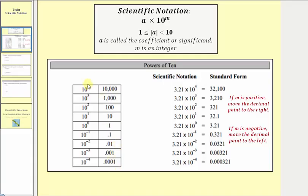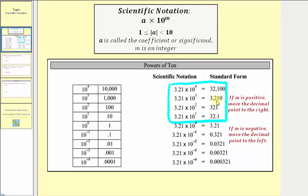Notice how when the exponent on 10 is positive, we're multiplying by a value greater than 1, and when the exponent on 10 is negative, we're multiplying by a value that's less than 1. So looking at these first four examples, because we're multiplying by a positive power of 10, notice how in standard form this value is greater than the value of a. Looking at these last four examples, when we're multiplying by a negative power of 10, notice how in standard form the value is less than the value of a.